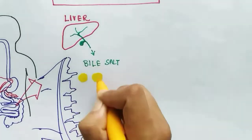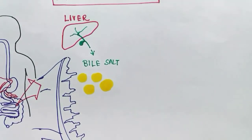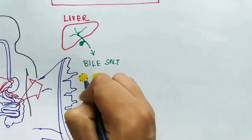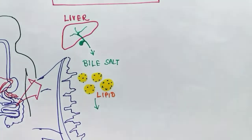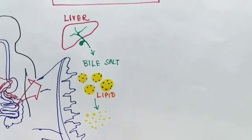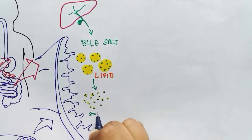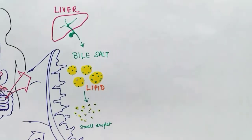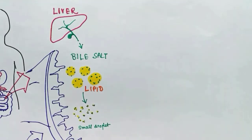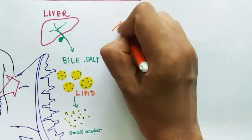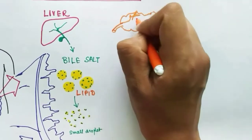The liver gives out bile into the small intestine. The bile contains bile salts, which act on lipids or fat. Bile salt acts as a dispersant and breaks down the bigger lipid droplets into smaller droplets so that the lipase enzyme can act easily and break down the fats. Due to the emulsifying property of bile salt, it resists the smaller droplets from joining again to make a bigger droplet, keeping the lipid droplets small so that lipase can work on them properly.